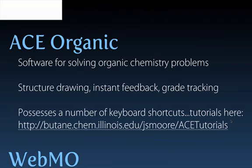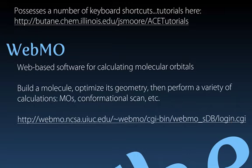A second tool we'll make use of is called WebMO, and this is web-based software that allows you to calculate molecular orbitals of small molecules. You can build a molecule, optimize its geometry, and then run a variety of calculations on that optimized geometry to gain more information about the reactivity or behavior of the molecule. For instance, you can calculate MOs, the dependence of conformation on energy, spectroscopic properties, and others.